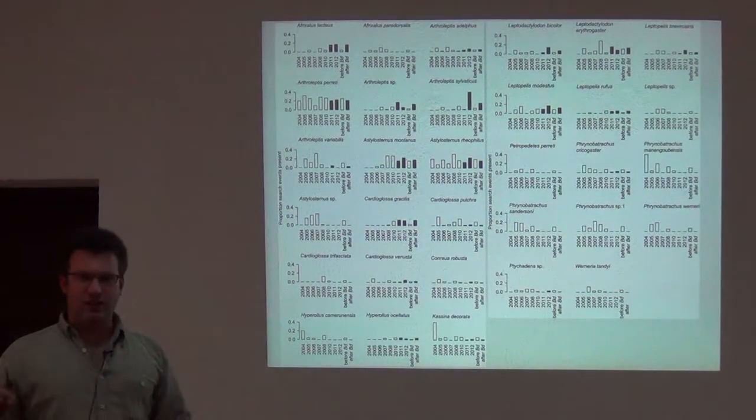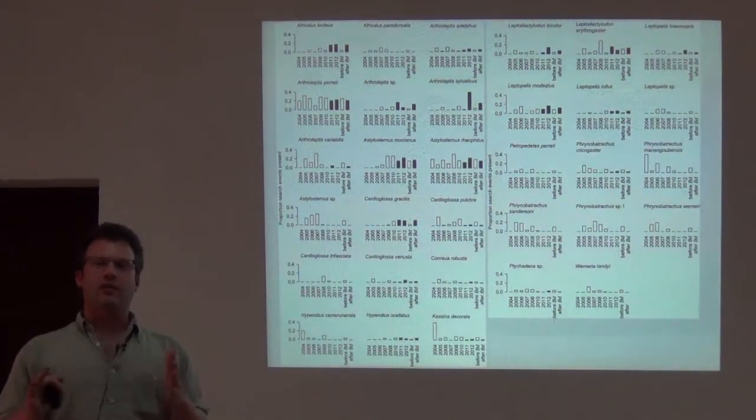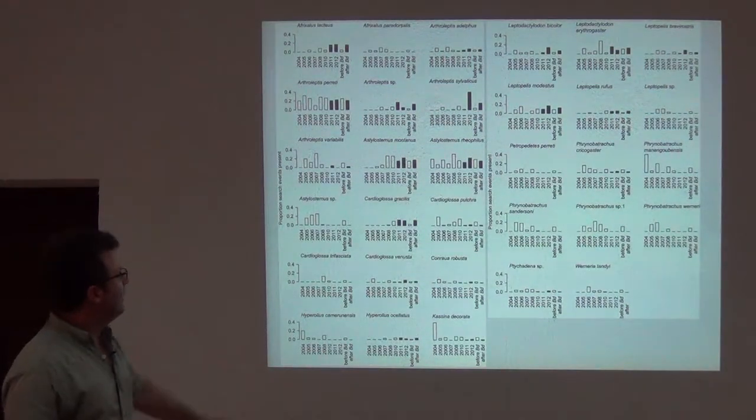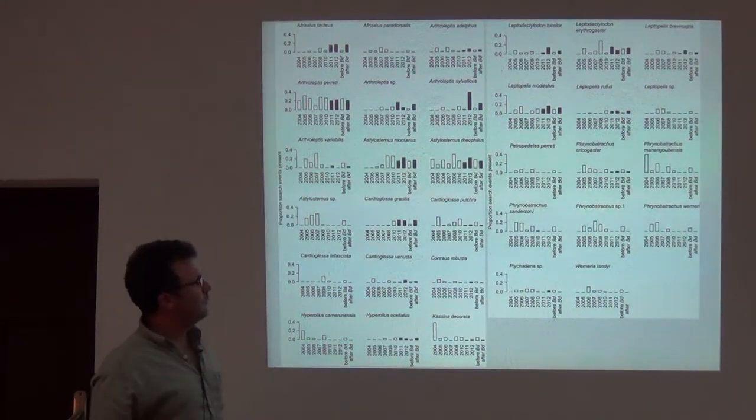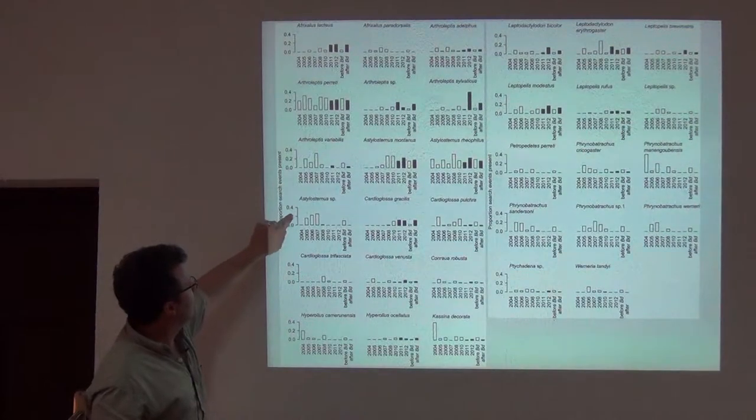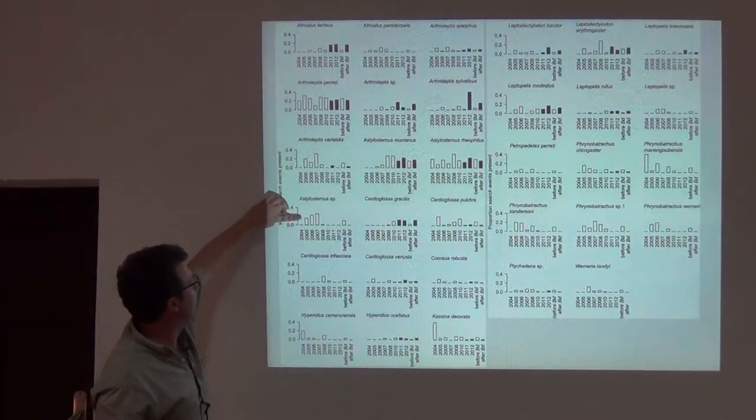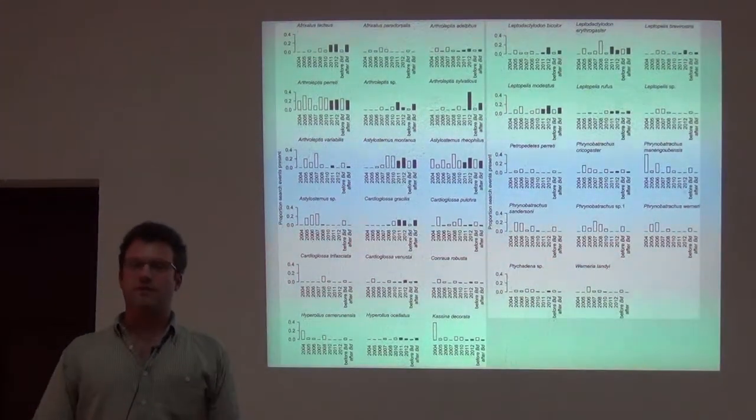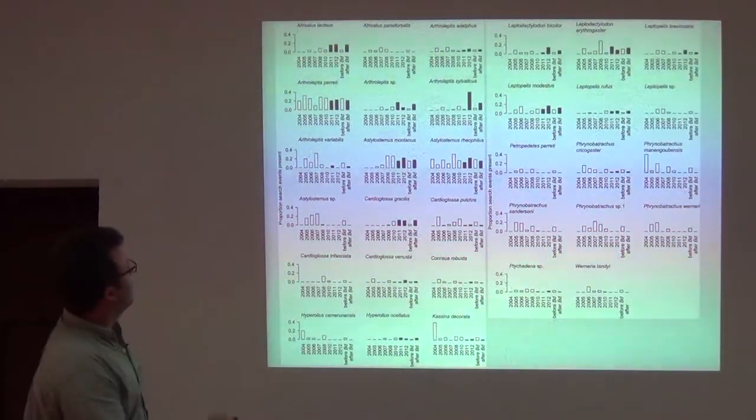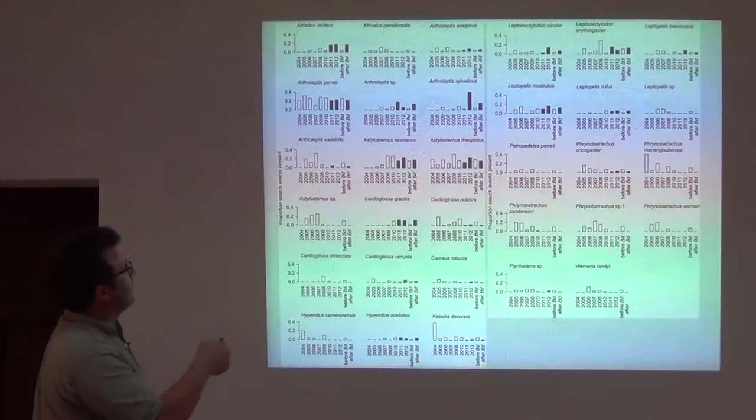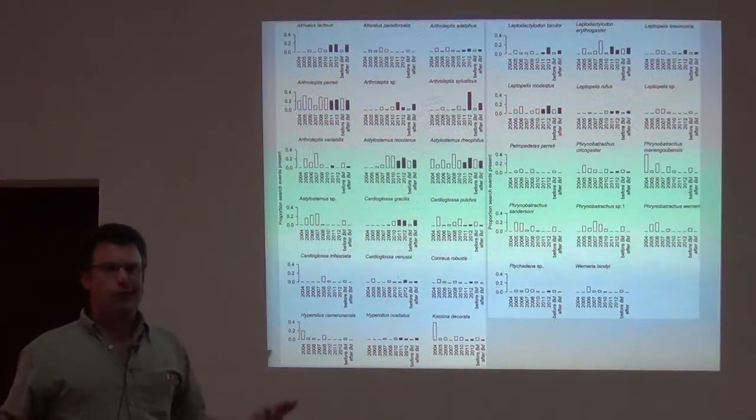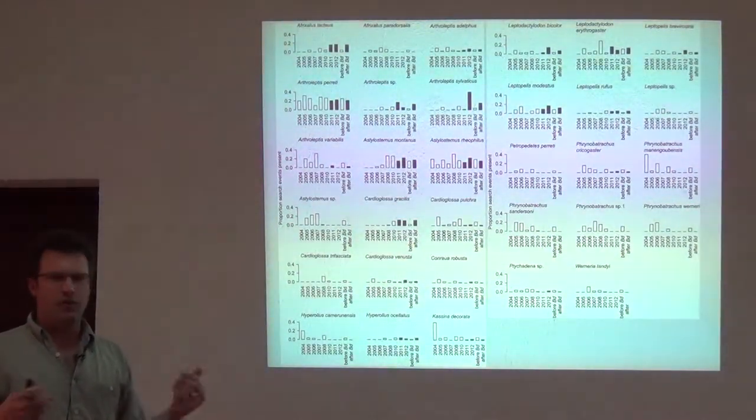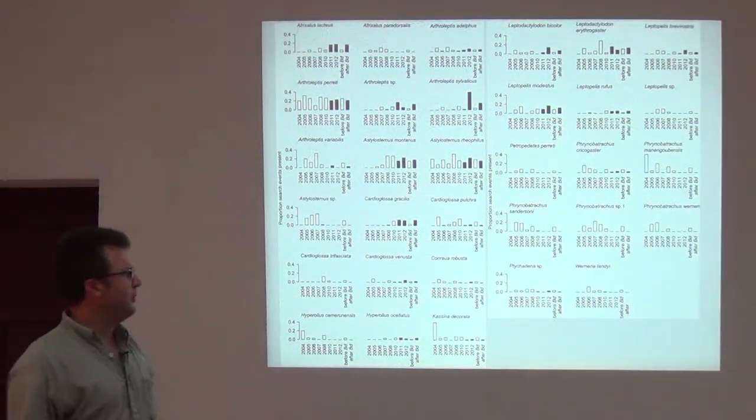What this is, is just an amazing condensation of surveys in the same place through time. Each one of these little plots is a species, and don't pay attention to the black and white right now, but just each is basically showing the proportion of search events in that year that resulted in finding that species. Some of these, like Arthroleptis, which is what I work on, they're really common. And you find them almost every time you go out, about half the time you go out to survey, you find an Arthroleptis. They're just very common species.